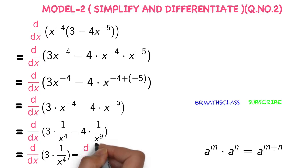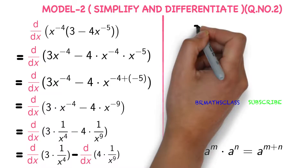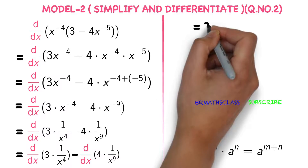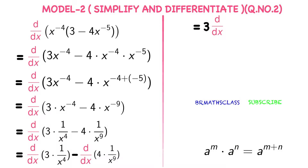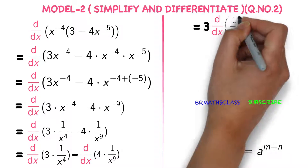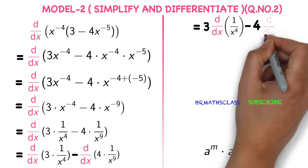We are differentiating each and every expression. You know, derivative of k·u is k into derivative of u. We already applied this formula in basic differentiation. So this can be written as 3 into derivative of 1 divided by x power 4 minus 4 into derivative of 1 divided by x power 9.